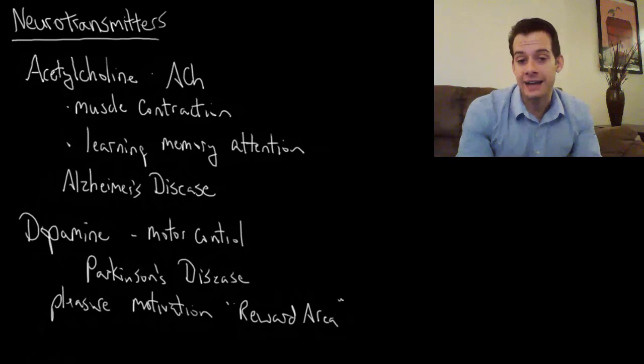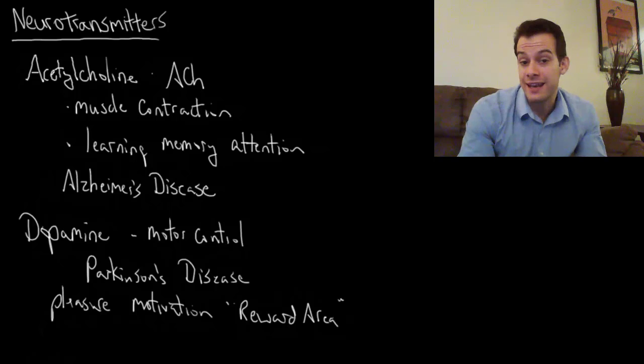This is active when we eat food, when we engage in sexual behavior, and it's also highly active when we use certain drugs like methamphetamine, cocaine, or heroin. These trigger a massive release of dopamine in this nucleus accumbens area, and this is what makes these drugs pleasurable but also what makes these drugs highly addictive.